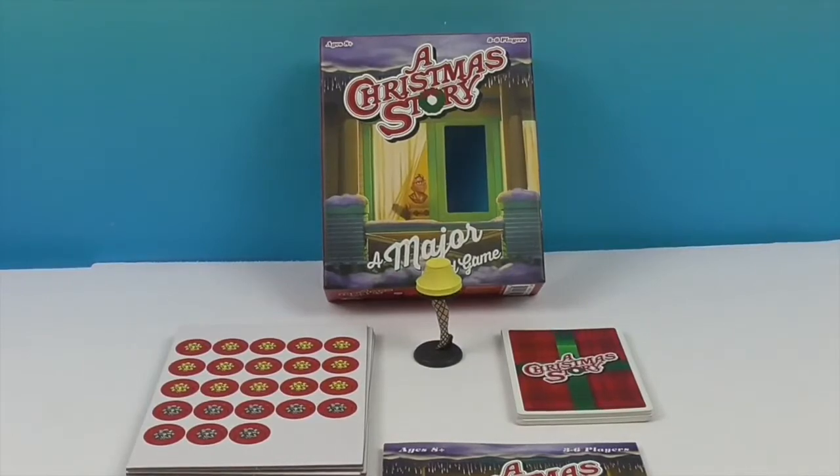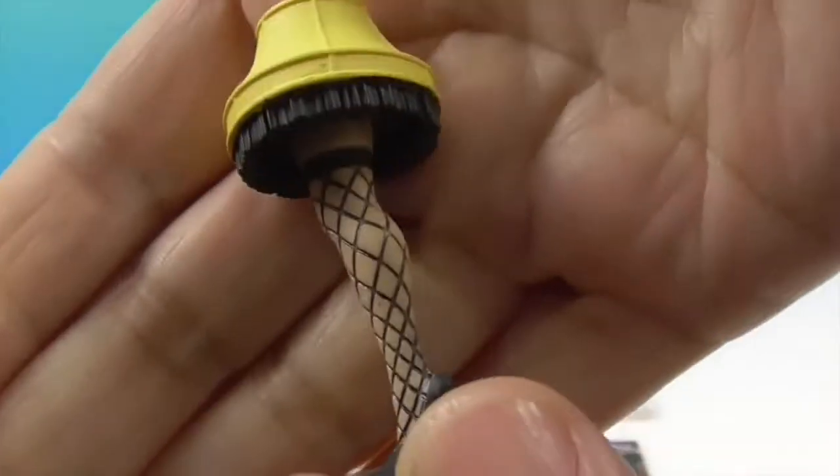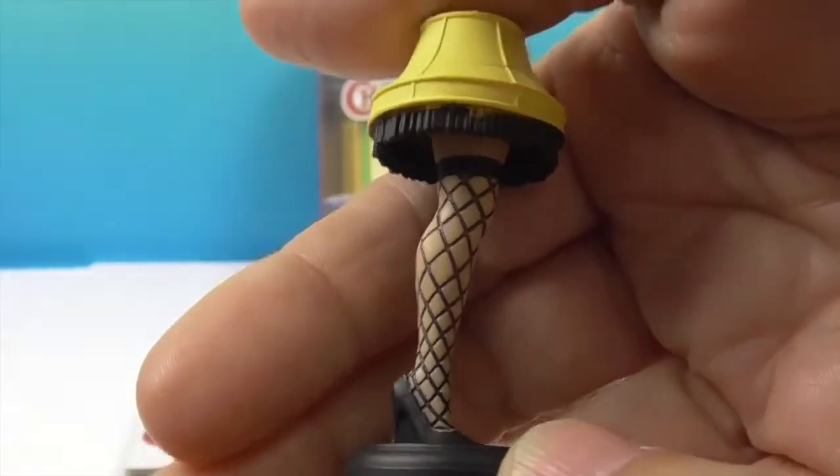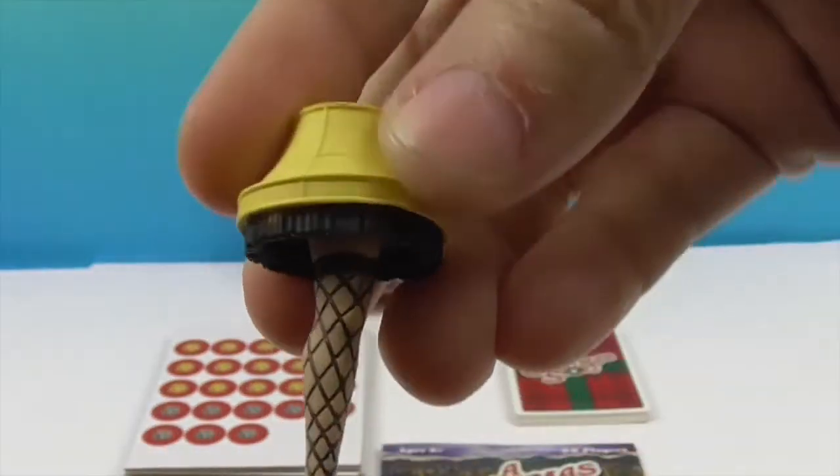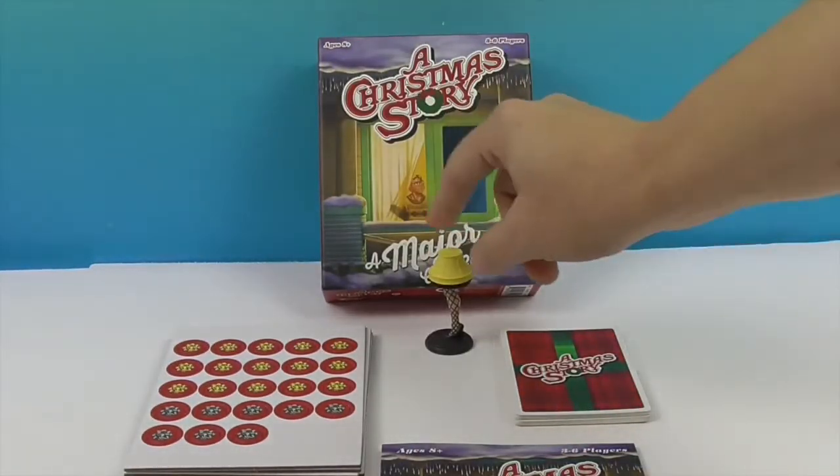Okay so we have all the stuff out of the box. Take a look at this most adorable leg lamp. Is that not the most adorable leg lamp you've ever seen? So cute with the fringe and everything. It's all one piece like that, looks like a little marker.